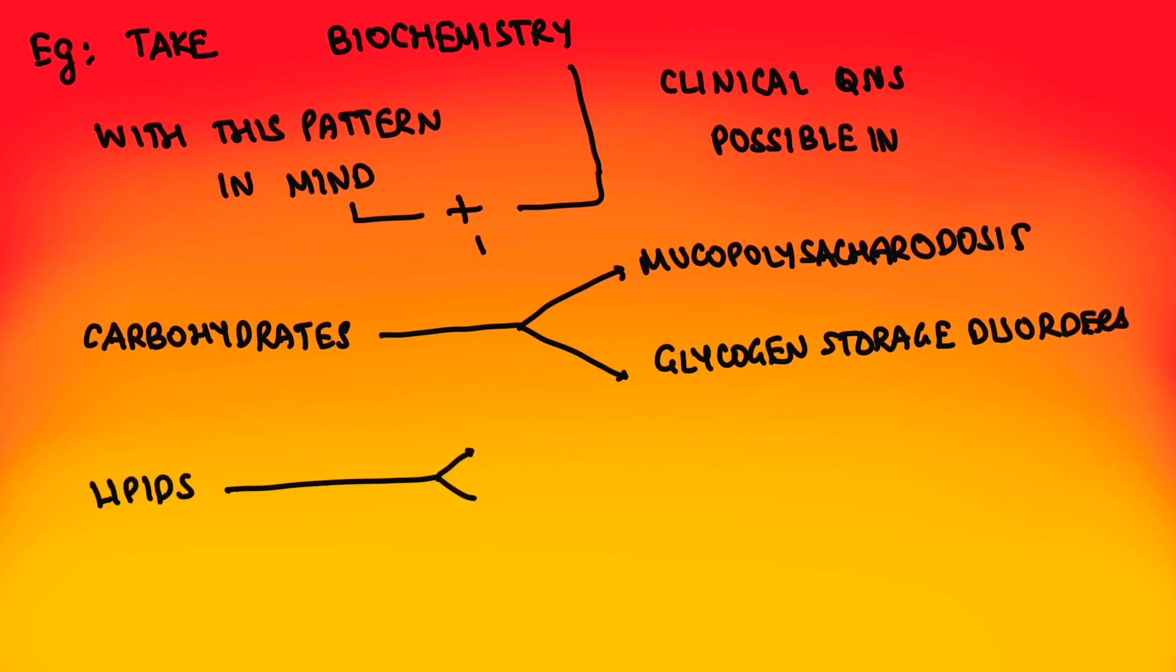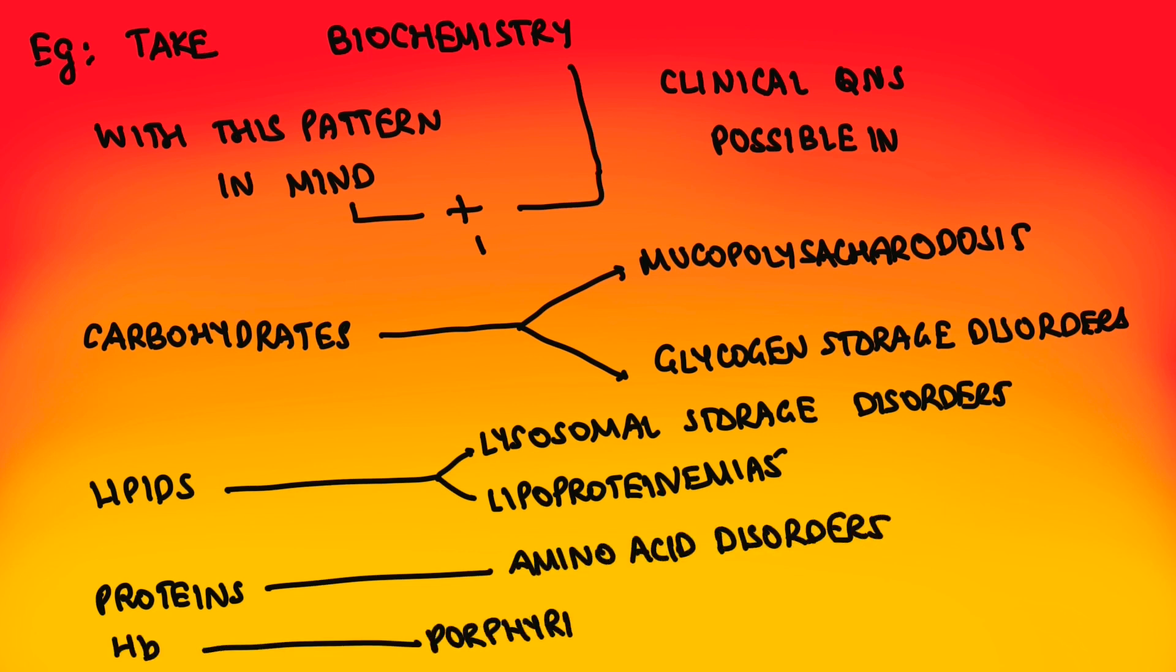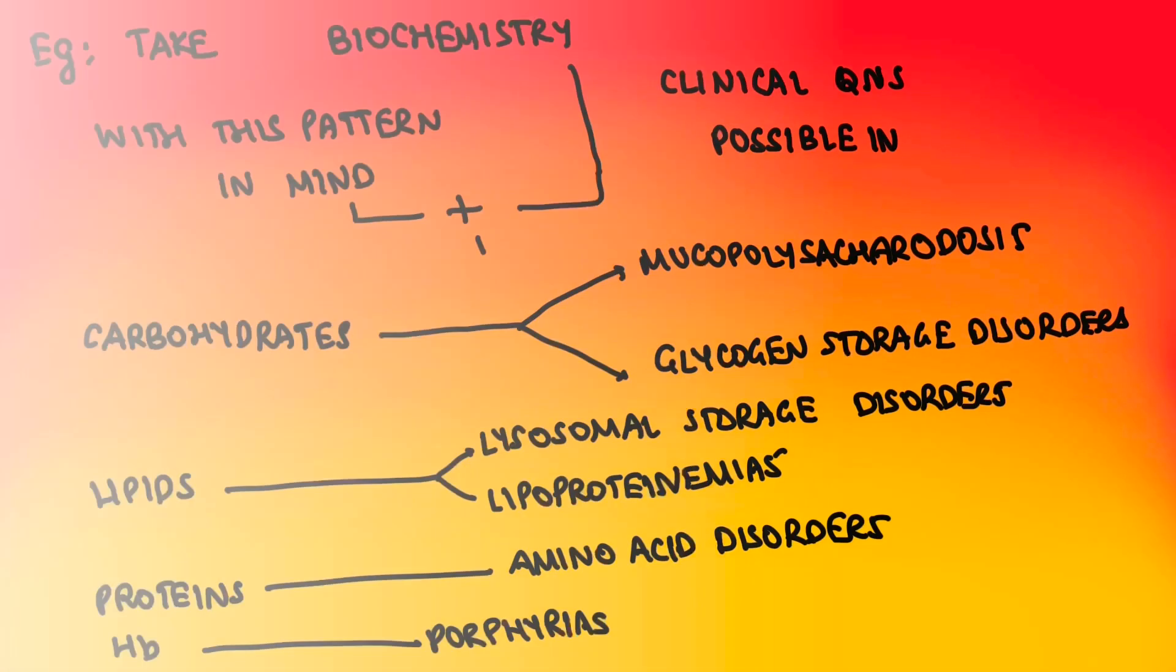Next, lipids: lysosomal storage disorders as well as lipoproteins. Next, with respect to proteins: amino acid disorders, uric acid, urea cycle disorders, and hemoglobin porphyrias are there.